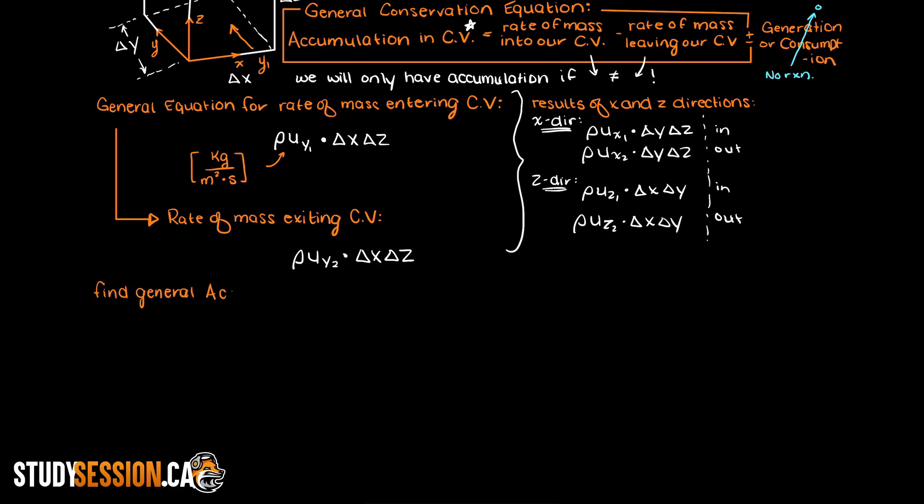So we are looking for the change in mass within our control volume over time. However, let's remember that mass can also be written as density times a volume, so let's substitute that in. And also, since we stated earlier that our control volume is constant, we know that it will not be changing with time, and we are left with the following equation.